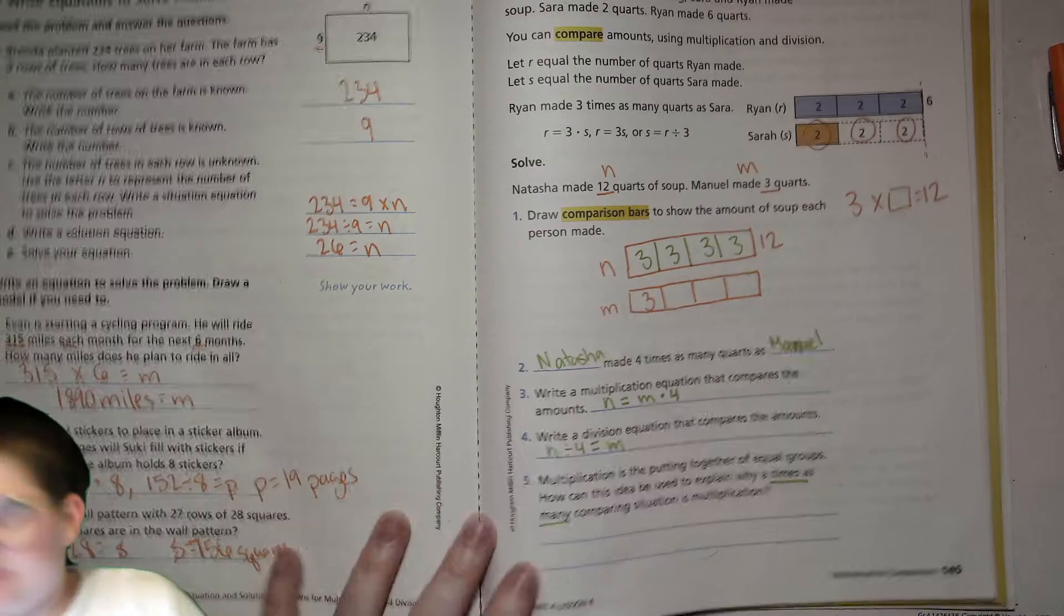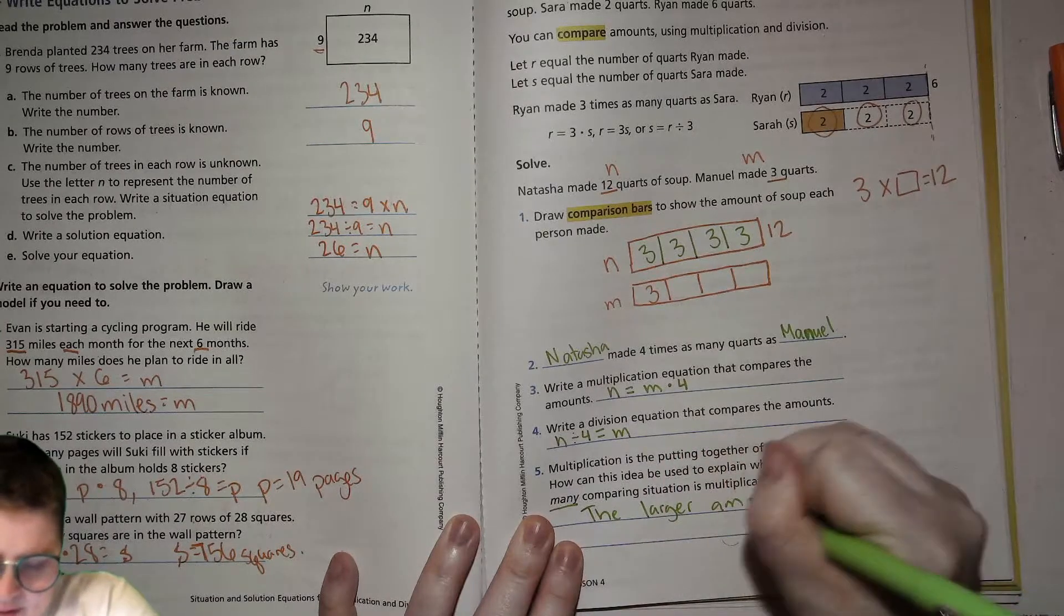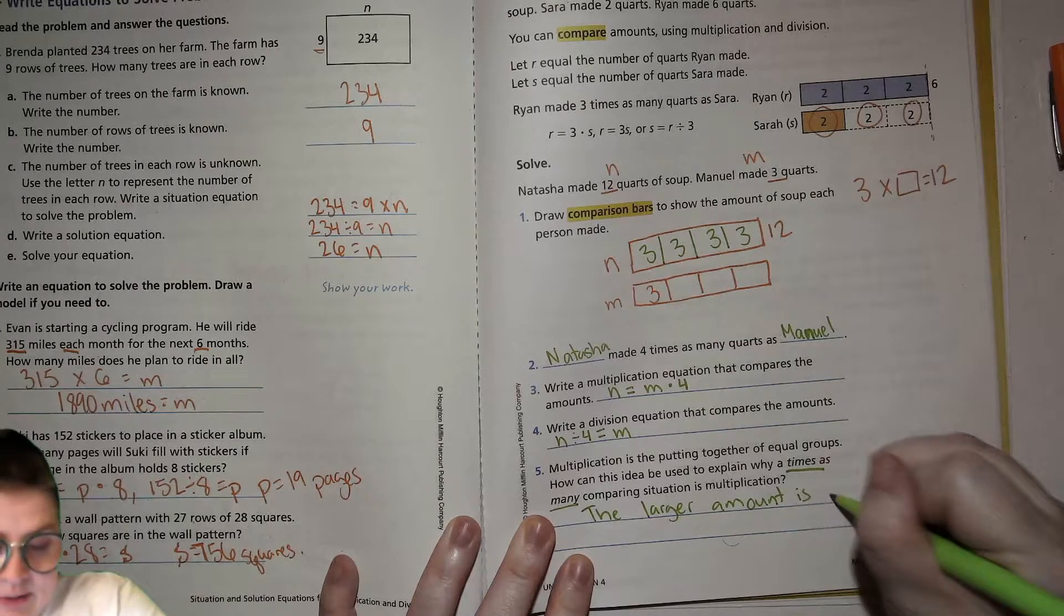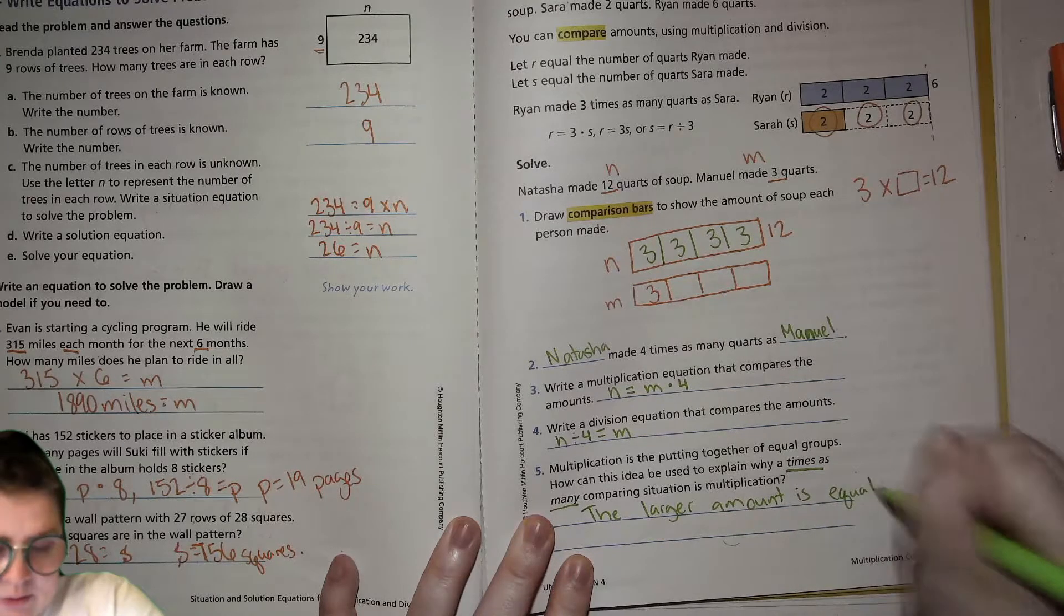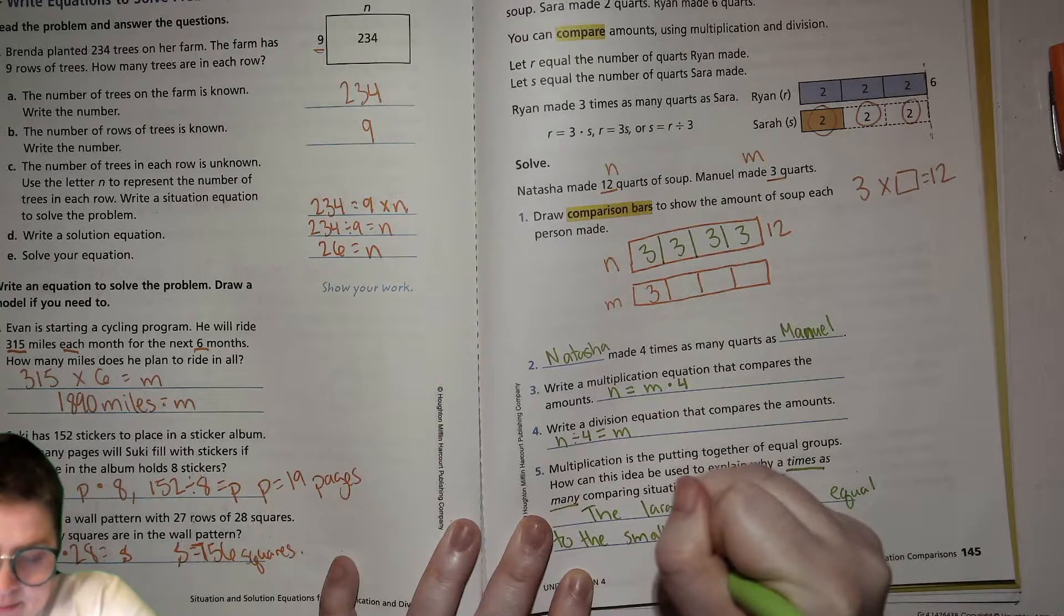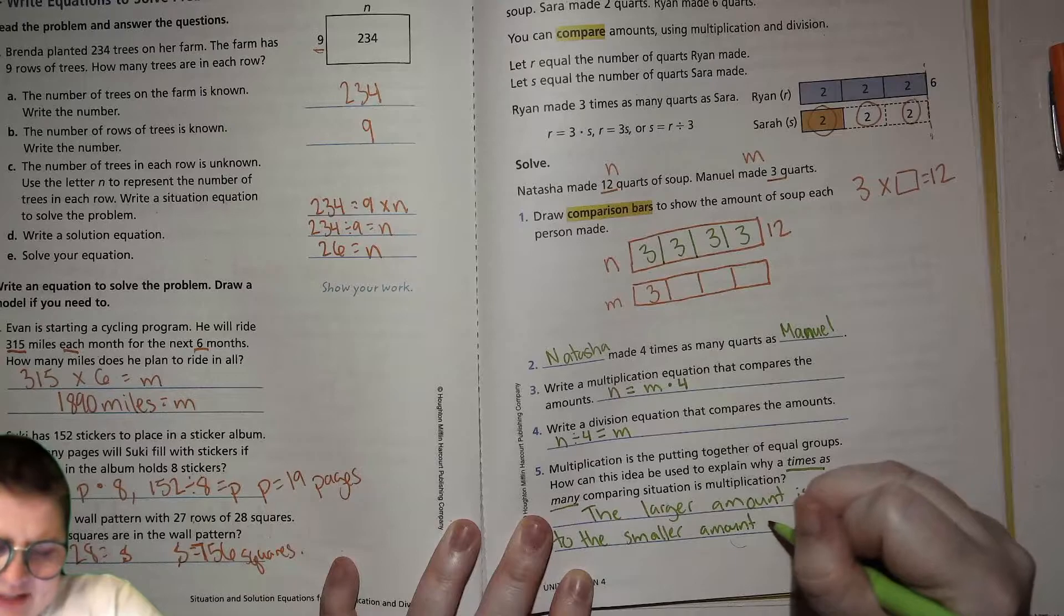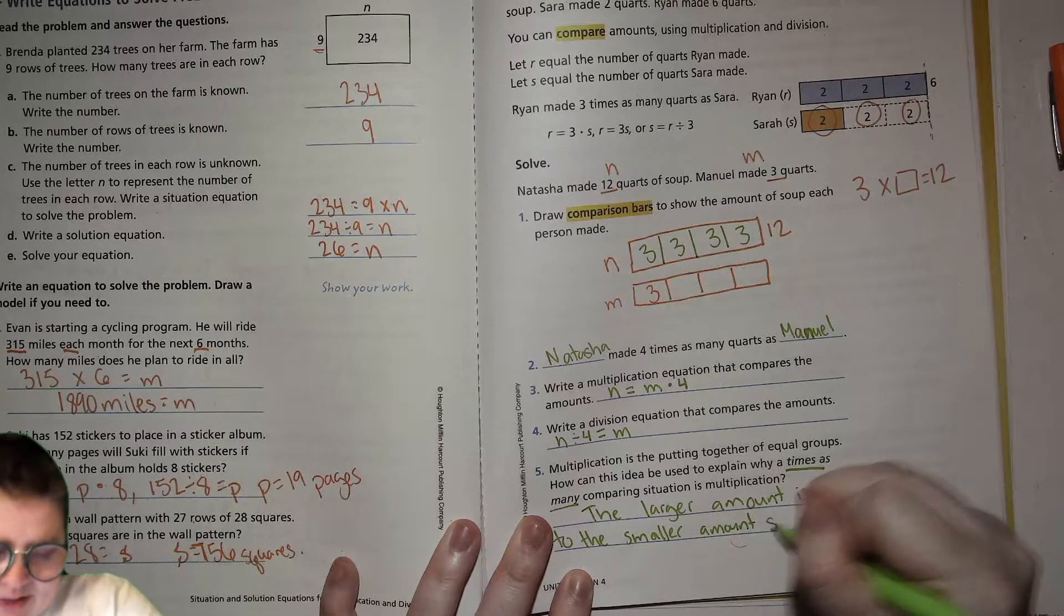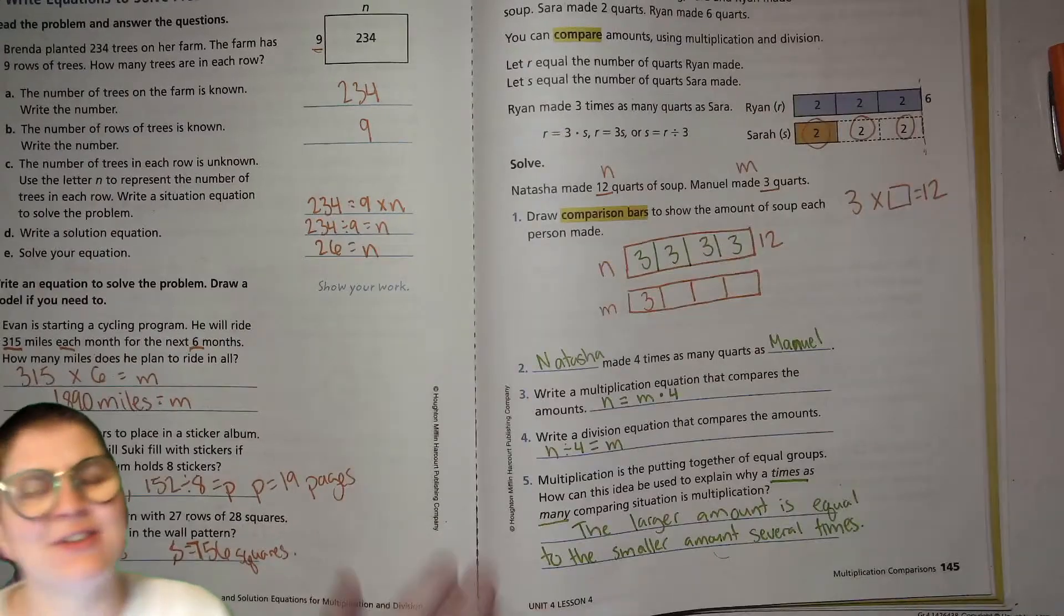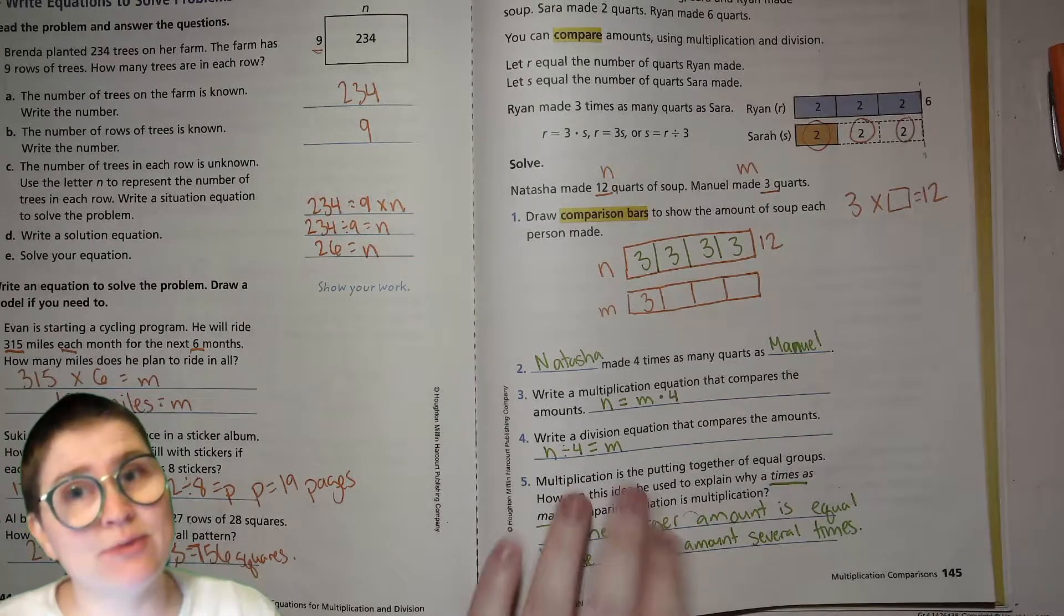So the larger amount is equal to the smaller amount repeatedly. Smaller amount several times. I don't know. It's kind of hard to put that in an explanation. Okay, pause. So you can write that down and then turn the page when you're ready.